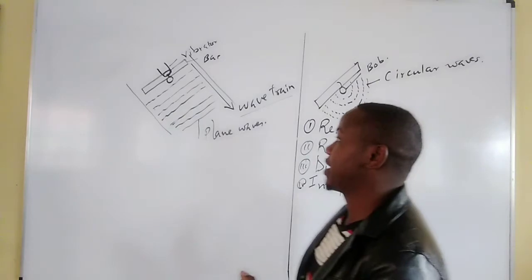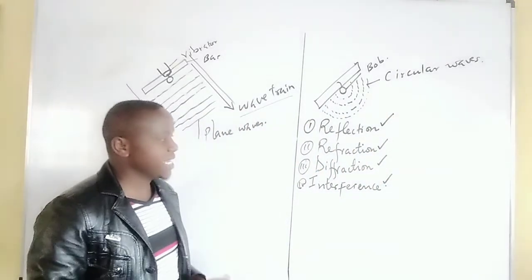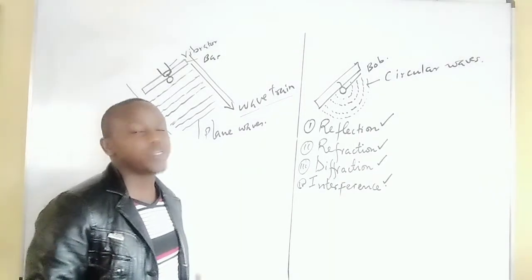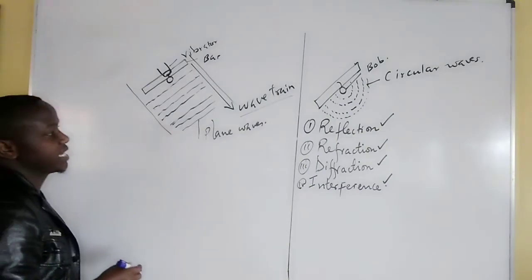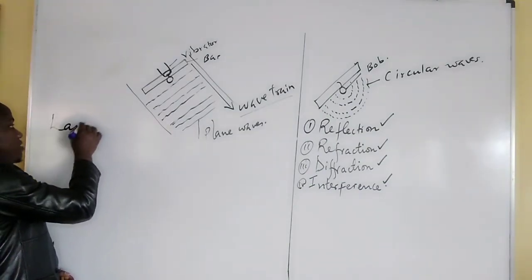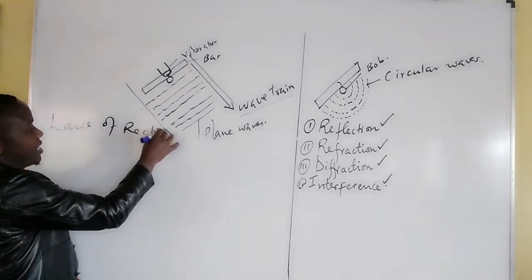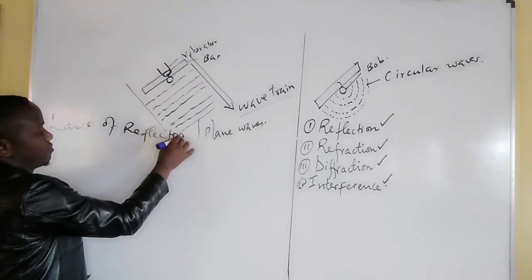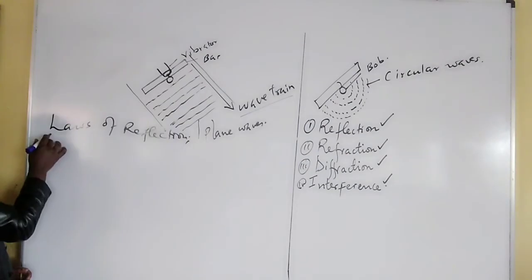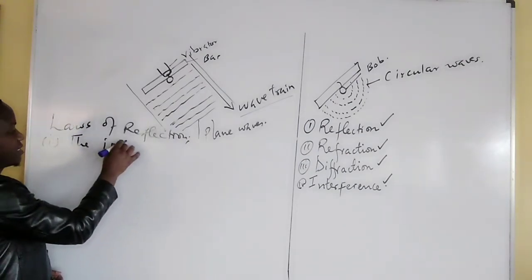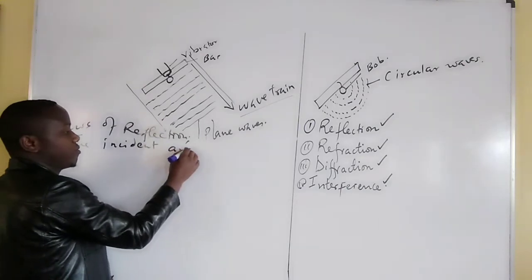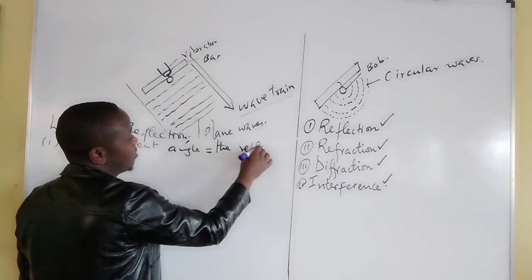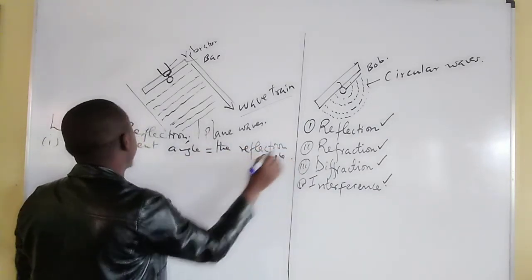So on reflection, it is good to know that all waves get reflected and they observe the laws of reflection, which are two. Under reflection, we say that the laws of reflection, this is just a reminder. We know that the incident angle is equal to the reflection angle, the angle of reflection.